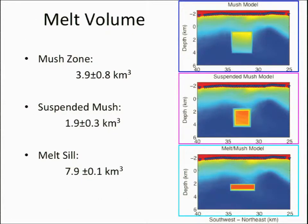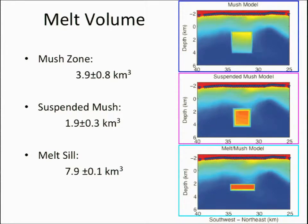In terms of volume of actual melt — not counting the crystals — in the suspended mush model we have about two cubic kilometers of melt, and in the melt sill model we go up to eight cubic kilometers. So the solution is not unique, but we now have a much narrower constraint on what the magmatic system beneath Newbury might be.